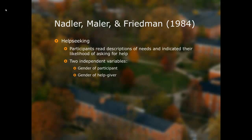In Nodler et al.'s study, participants read descriptions of needs and indicated their likelihood of asking for help. There were two independent variables: the gender of the participant and the gender of the help-giver. They had several situations — several written 'need states' — where either a male or a female could give help, and then the participant indicated their likelihood of asking for help. They were manipulating the gender of the help-giver, and quasi-manipulating gender of the participant, which research methods folks will know is really a subject variable, making it a quasi-experiment.